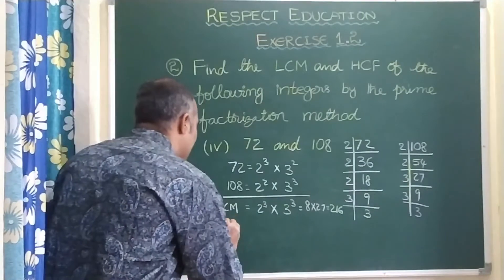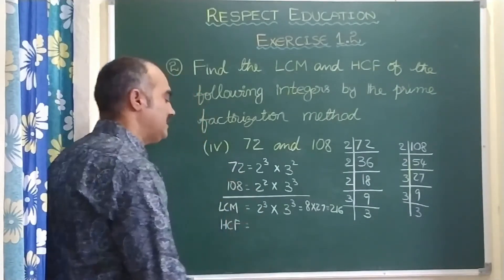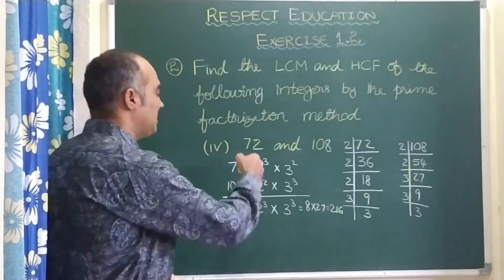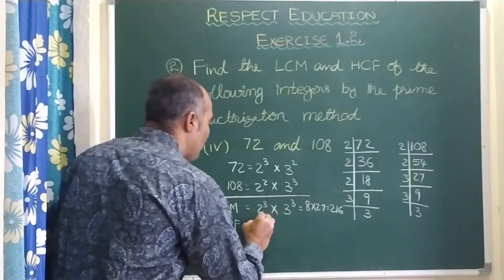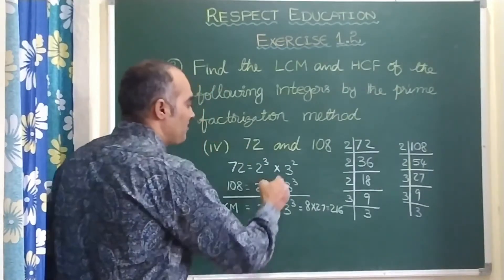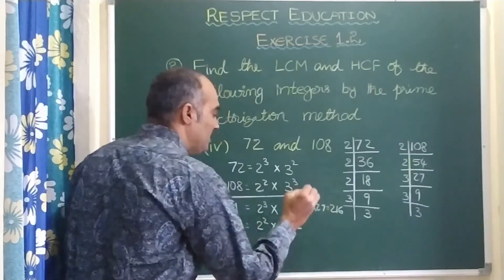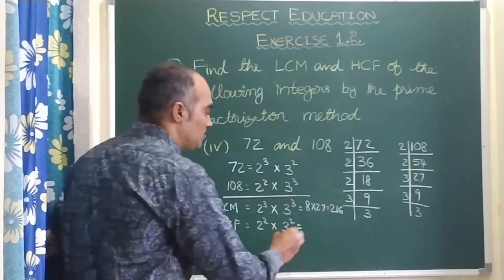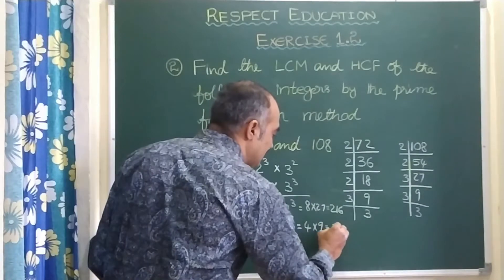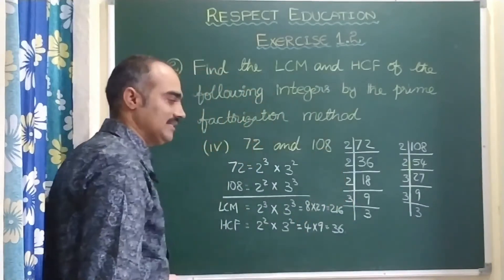Now let us find the HCF. H stands for highest, but we should take the least. 2 power 3 and 2 power 2 — least is 2 power 2. 3 power 3 and 3 power 3 — least is 3 power 2. So it is 2 square is 4, 3 square is 9, and 4 nines are 36. So HCF is 36.